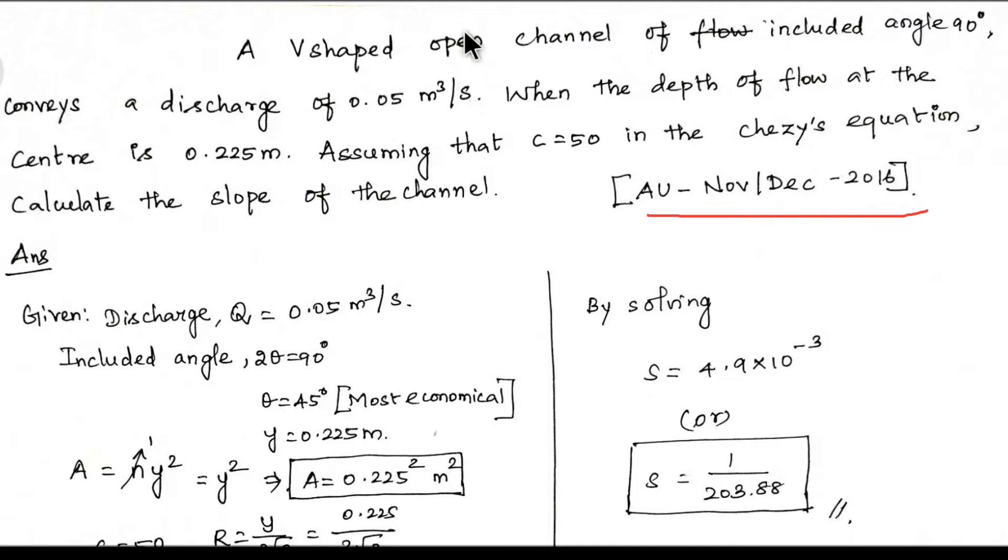V-shaped open channel of included angle is 90 degrees. V-shaped is triangular section because it is an open section. The included angle is 2θ equal to 90 degrees, which means θ equal to 45 degrees.